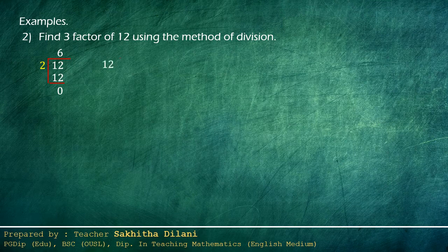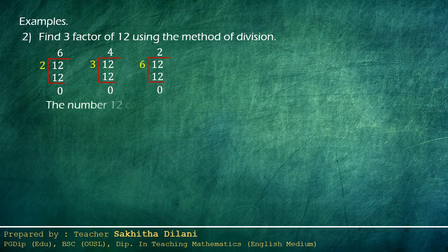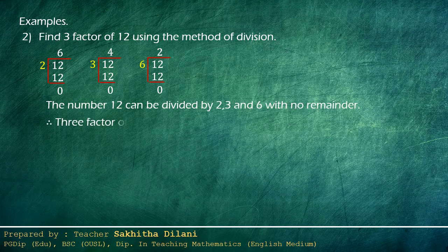Let's divide twelve by three. It gives four and there is no remainder. So three is a factor of twelve. Let's divide twelve by six. It gives two and there is no remainder. So we can list out three factors of twelve. They are two, three and six.